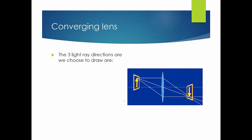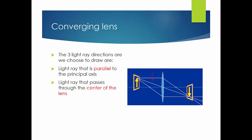What are the three light rays? The first light ray is the light ray that is parallel to the principal axis. The second light ray is the light ray that passes through the center of the lens. And the third light ray is the light ray that passes through the focal point of the lens before reaching the lens and then is refracted by the lens.